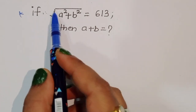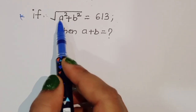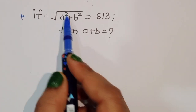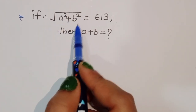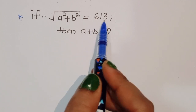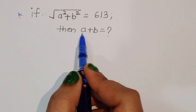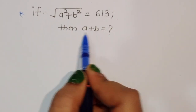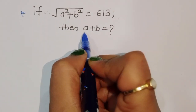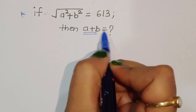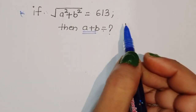The question is given: if the square root of a squared plus b squared is equal to 613, we have to find out the value of a plus b. What is a plus b equal to?